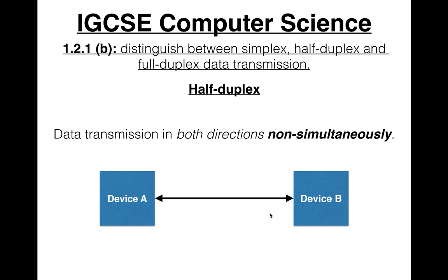An example of this are handheld transceivers or walkie-talkies. You hold a button to talk to the other person, and then the other person releases the button to listen to what you have to say. That's pretty much how it works. Also, radios used in police cars have a similar idea.